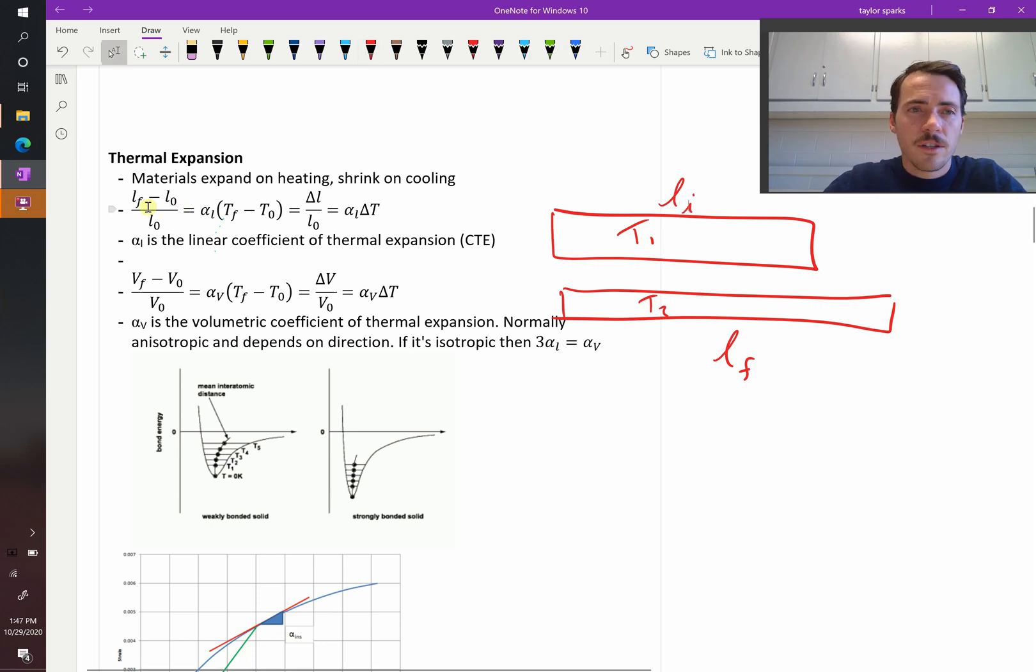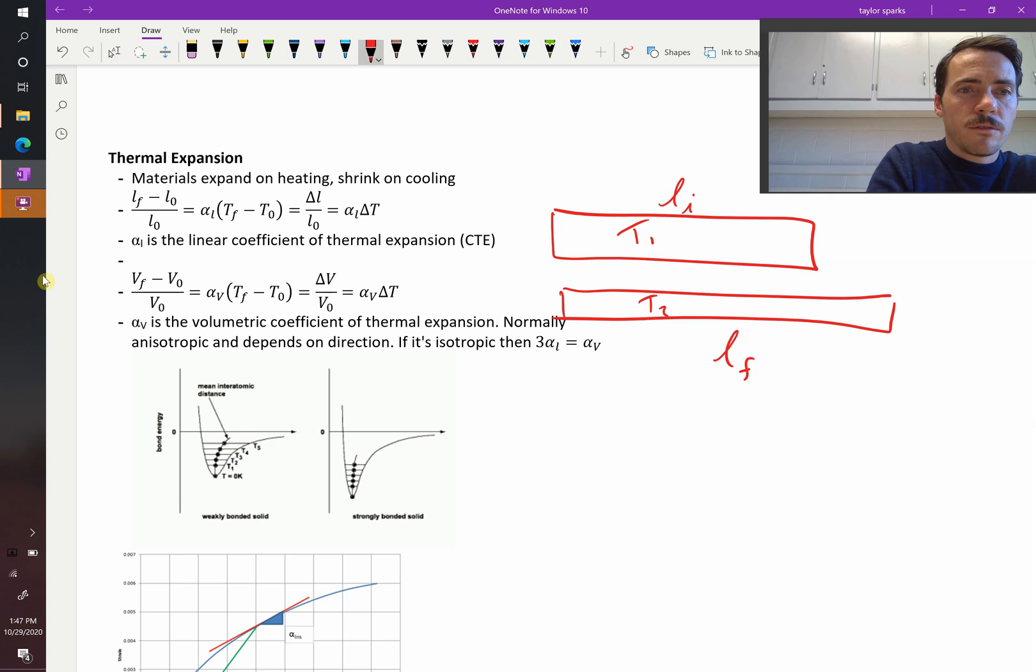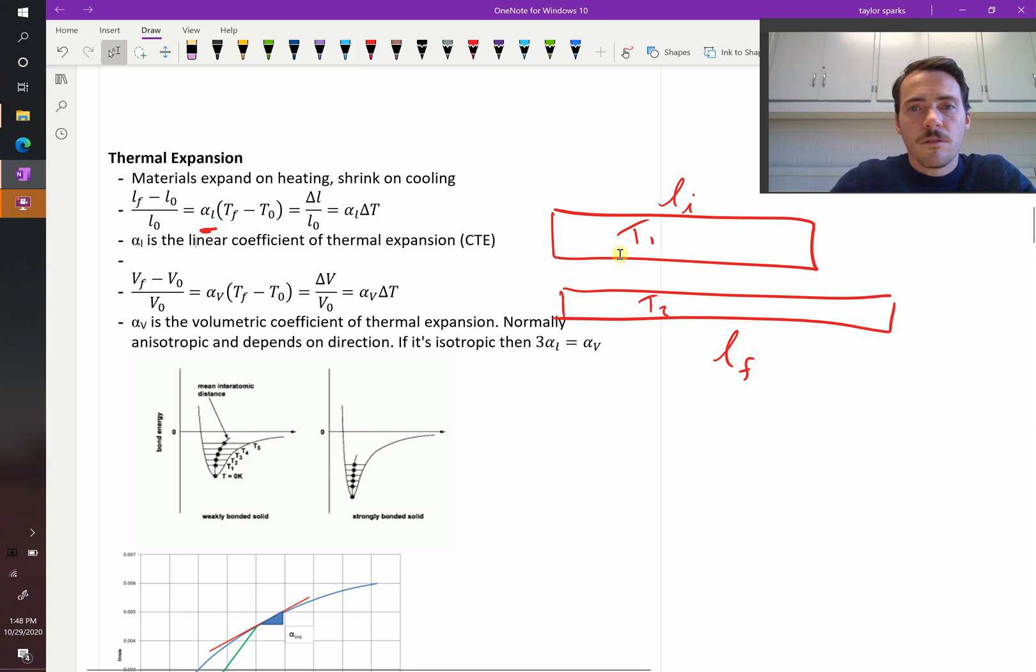So we can calculate our thermal expansion. We're going to take our L final minus our initial length, L0, they call it there. It's going to be equal to the coefficient of thermal expansion, that's alpha L. We're calling it L because it's the linear coefficient of thermal expansion, multiplied by the difference in temperature. I labeled it T1 and T2, so T2 minus T1, but it could be your final temperature minus your initial. So that's one way to think about it.